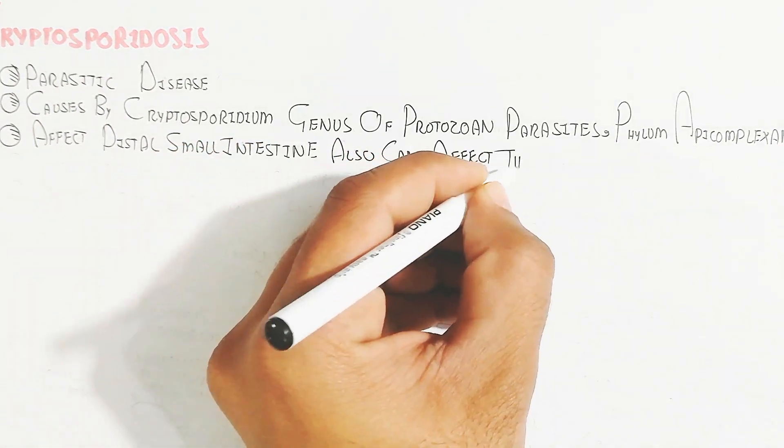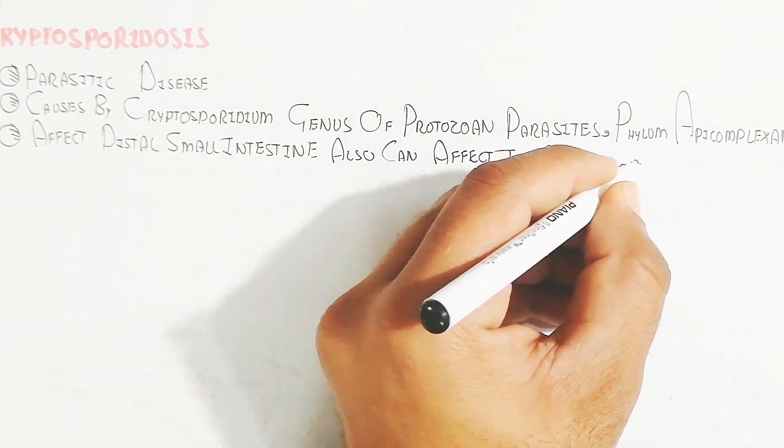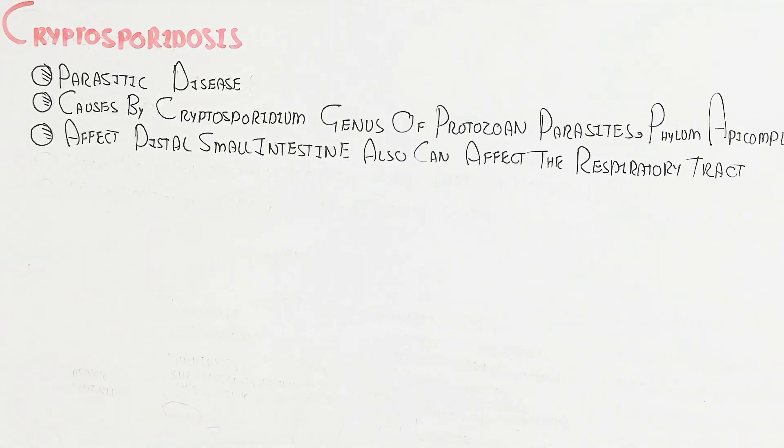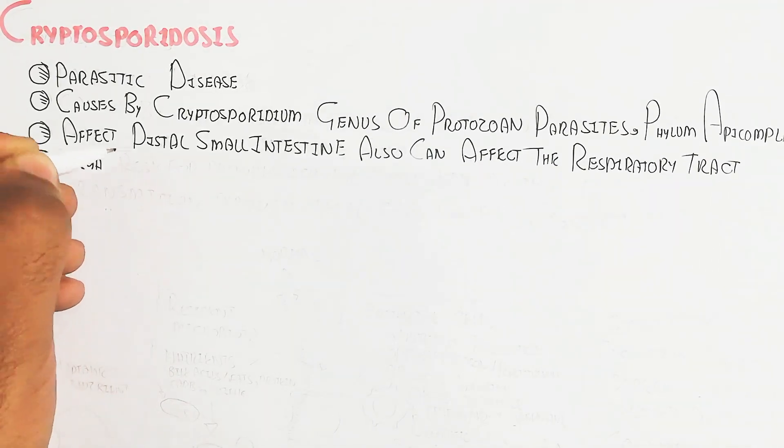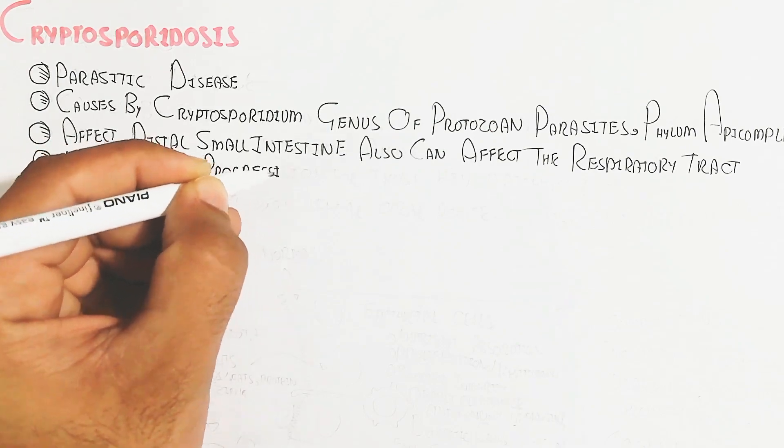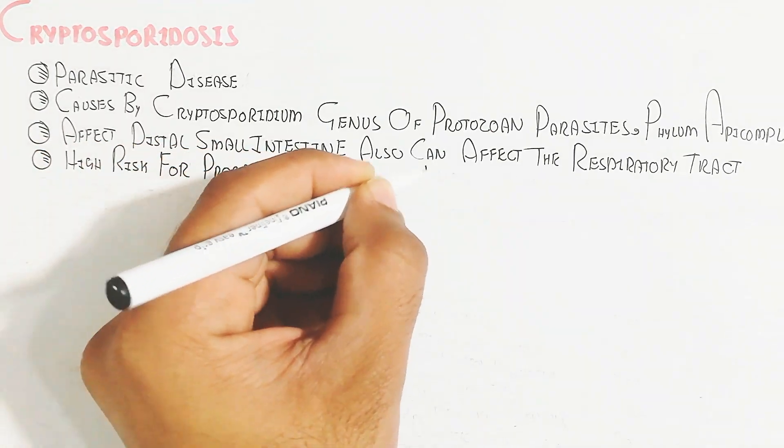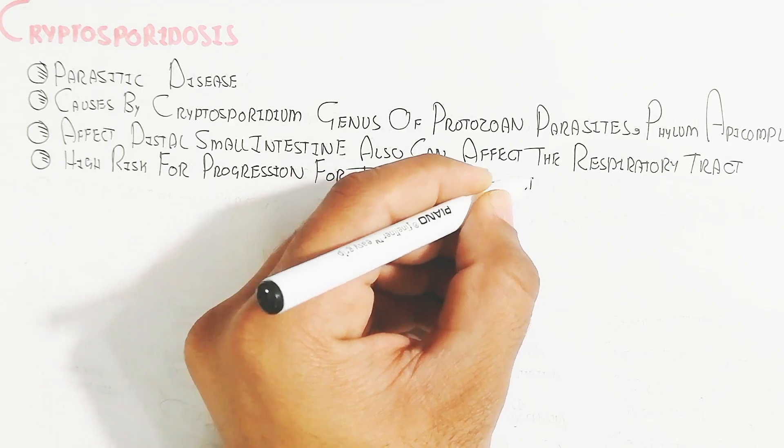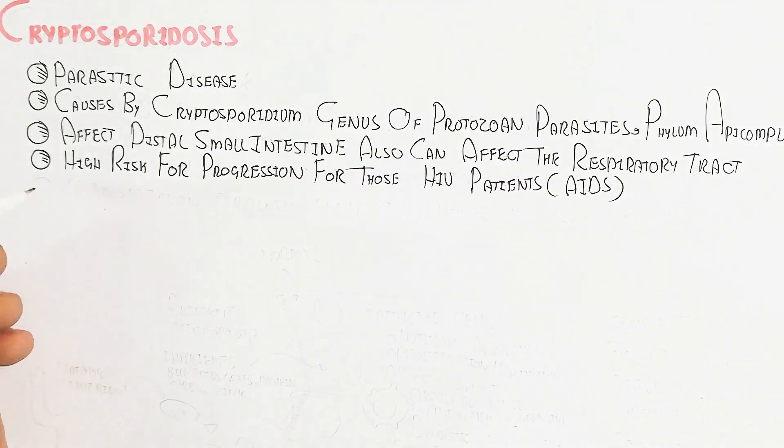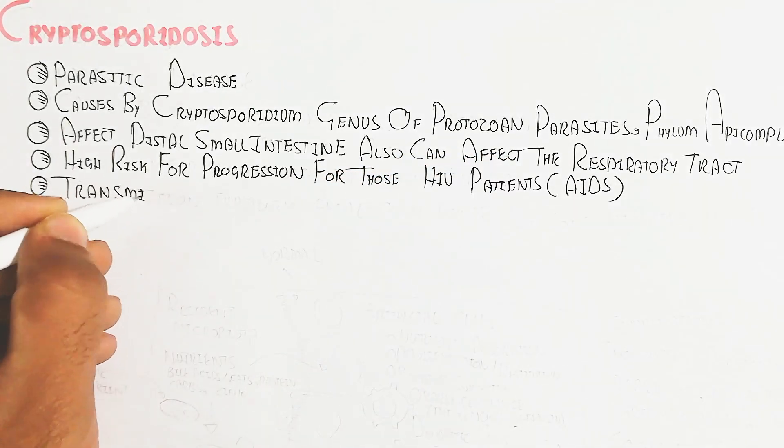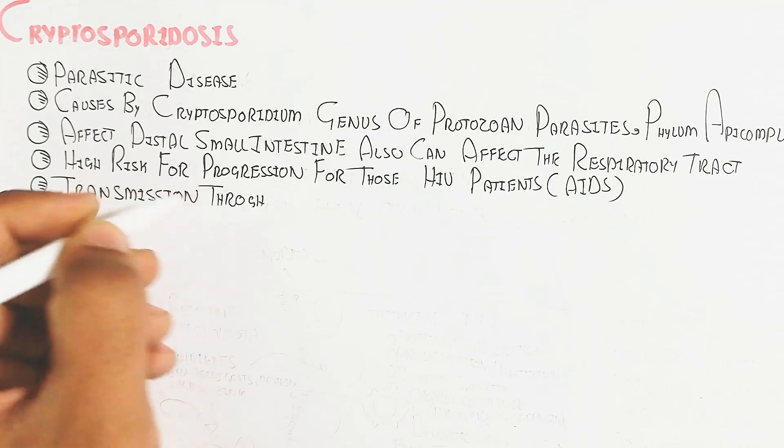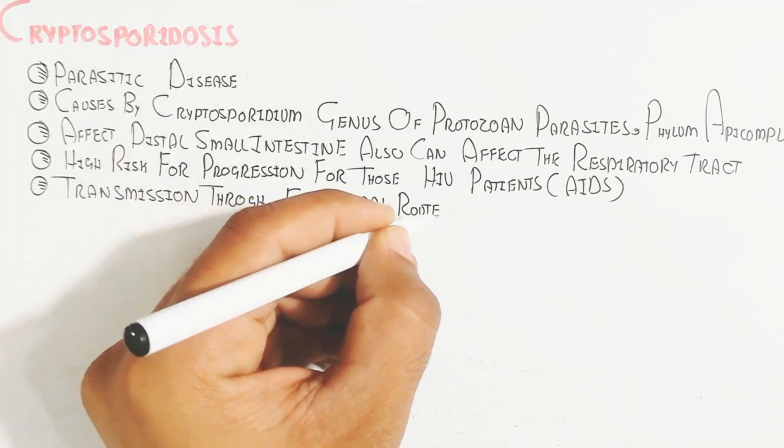It can also affect the respiratory tract, with high risk of progression for those with HIV patients. During swallowing, it can also affect the respiratory tract whenever it is transmitted into the respiratory system, causing pneumonia.